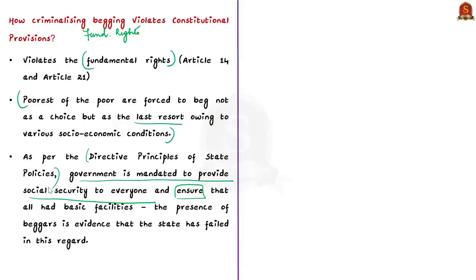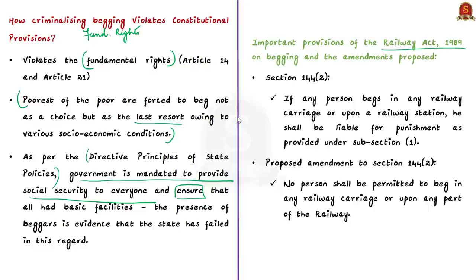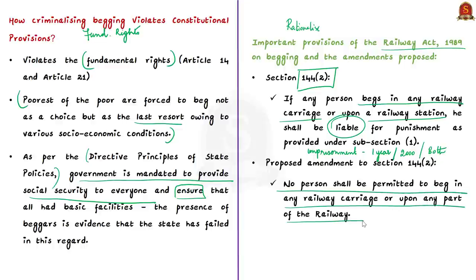In this regard, the provisions of the Railway Act of 1989 also criminalize begging. The Ministry of Railways has proposed to amend the provisions of the Act in order to decriminalize or rationalize the penalties for begging. Section 144 subsection 2 of the Railway Act says that if any person begs in any railway carriage or at a railway station then he or she shall be liable for punishment which is imprisonment for a term that may extend to one year or with a fine that may extend to Rs. 2000 or with both. But now the proposed amendment states that no person shall be permitted to beg in any railway carriage or upon any part of the railway. This means the severity of the punishment is considerably reduced or there will be no punishment for begging in railway.